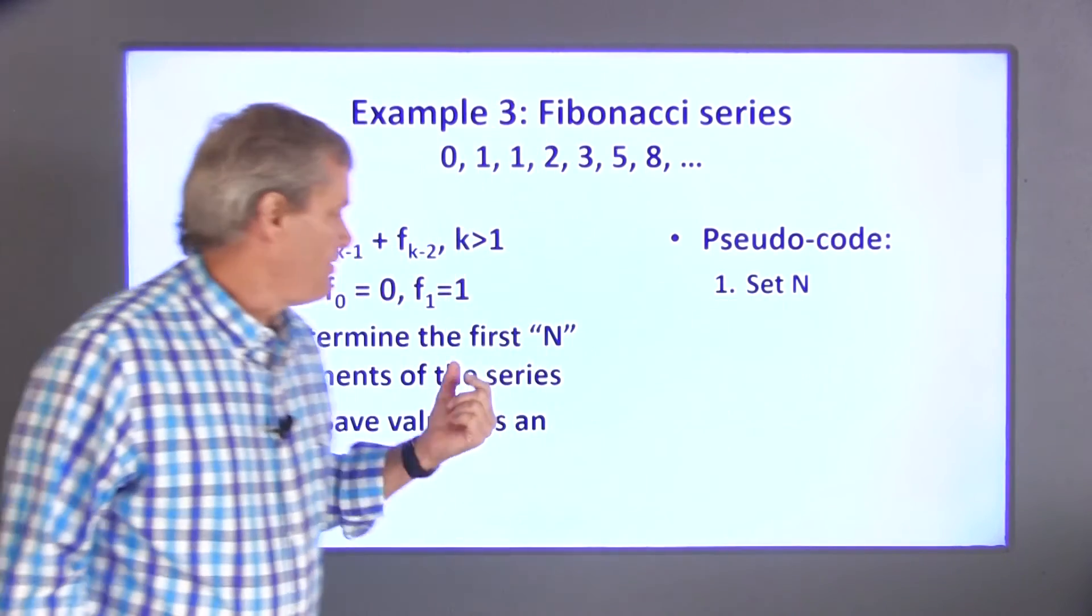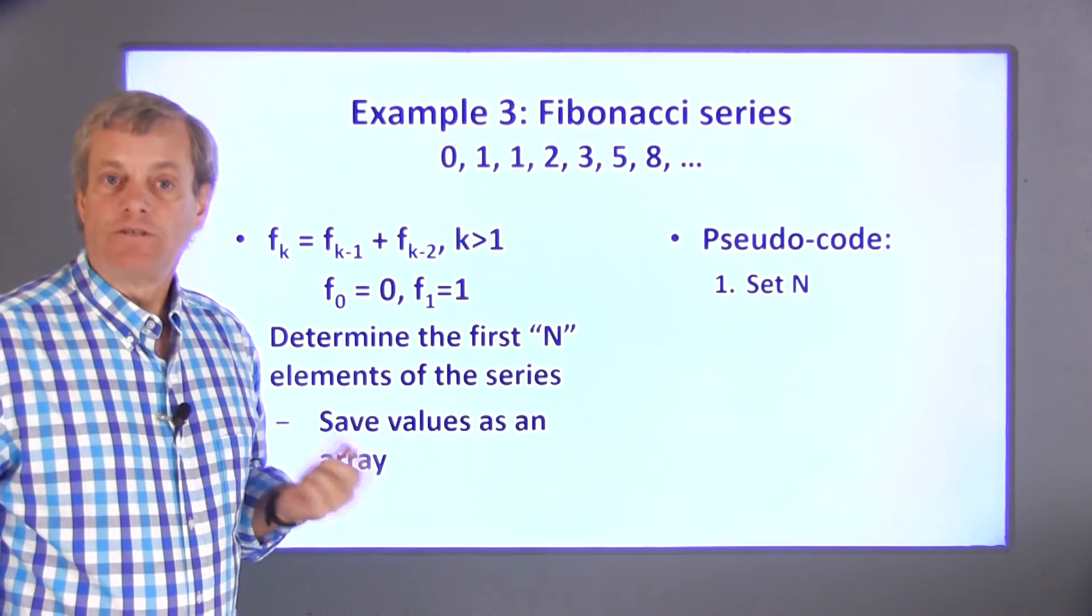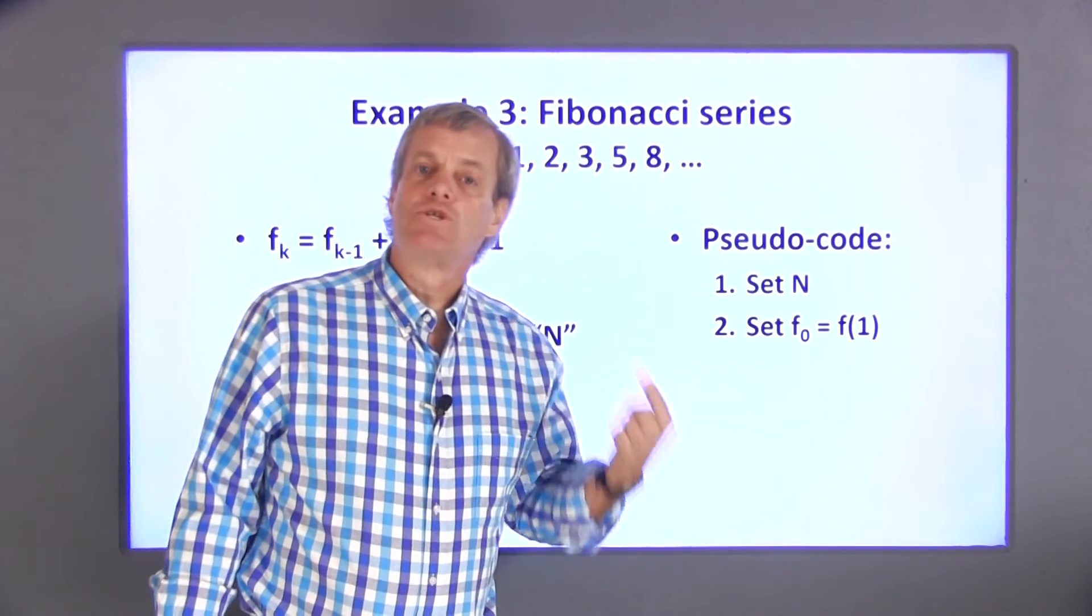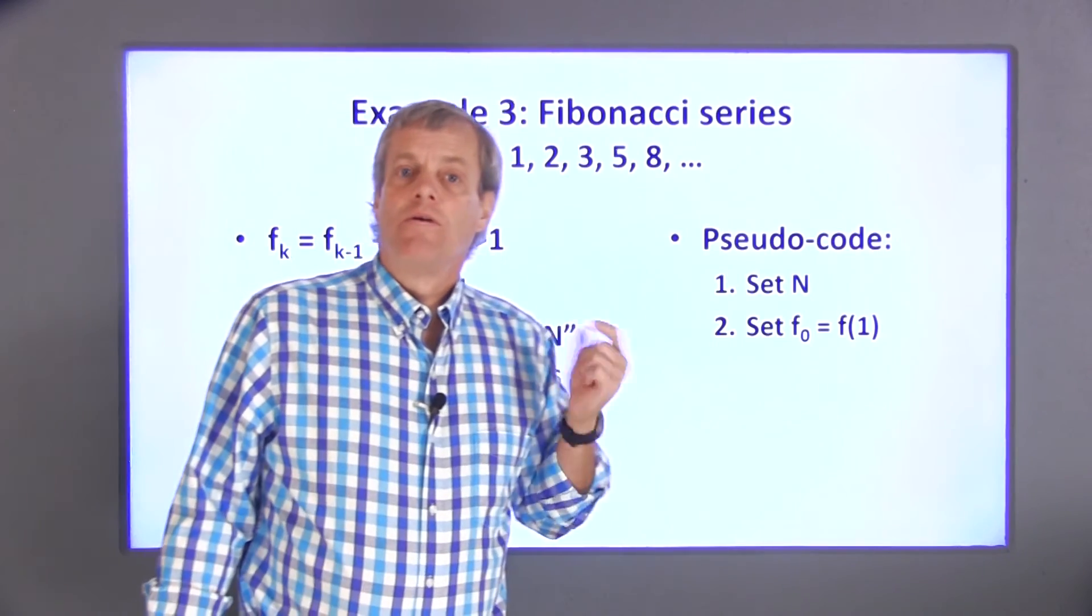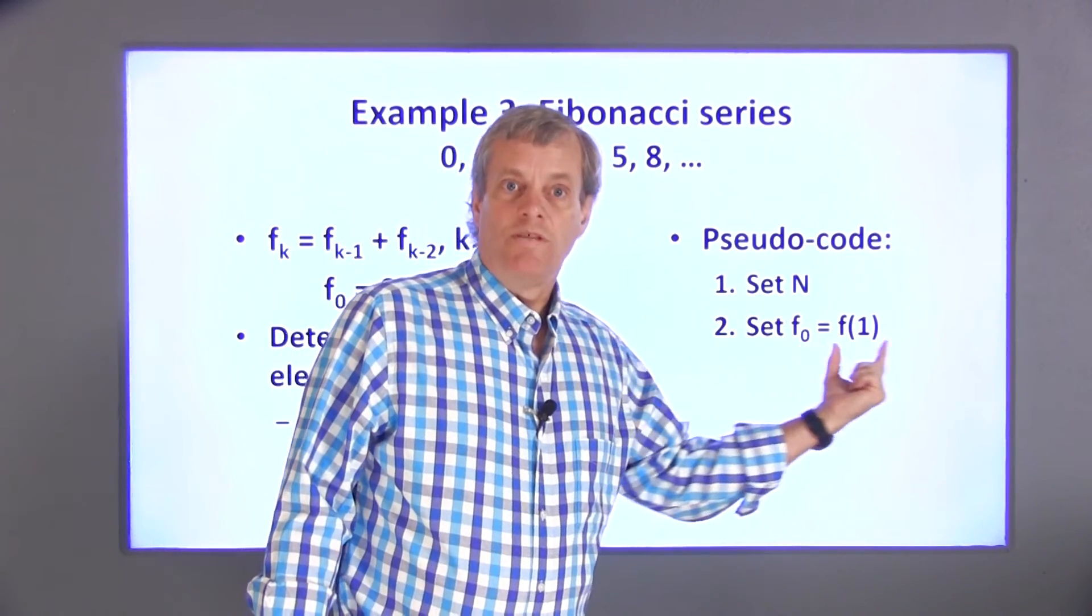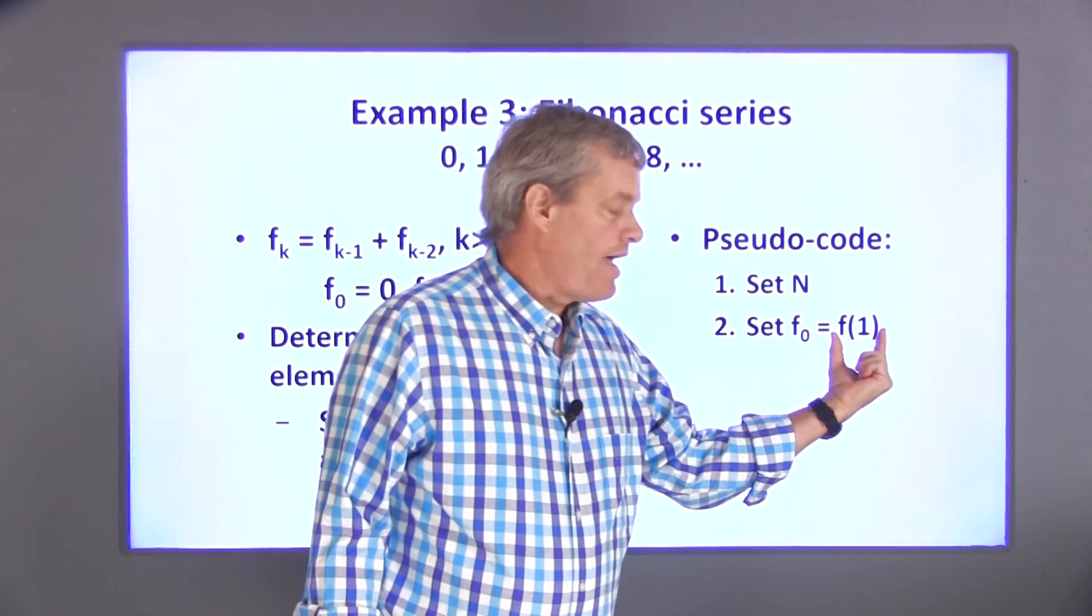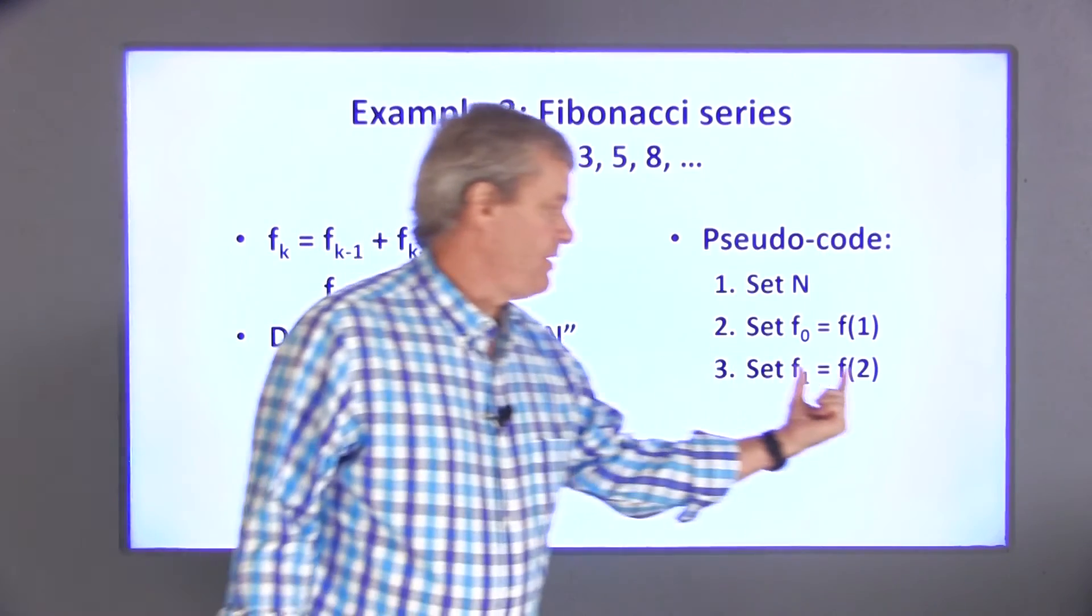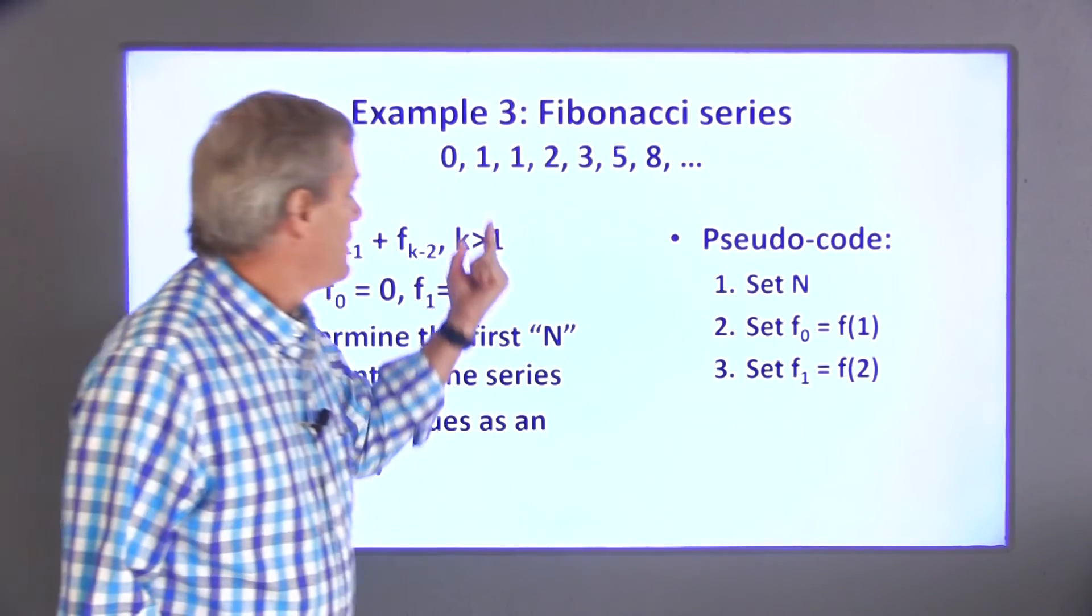Obviously, I first need to set a value for n so that I know how many terms in the series I'm going to create. I also need to set the first two values in the series. The first value, F sub 0, will be the first element in the array, so F of 1 is equal to 0. The second element in the array, F of 2, is 1.